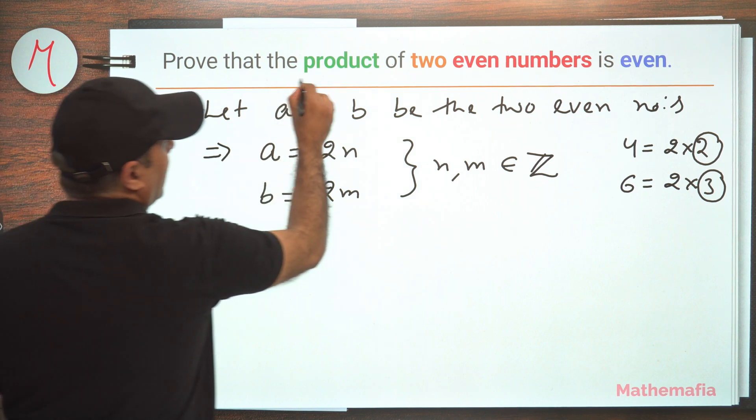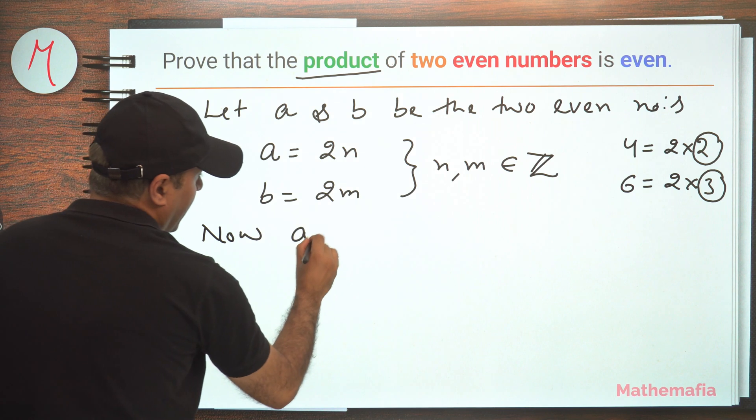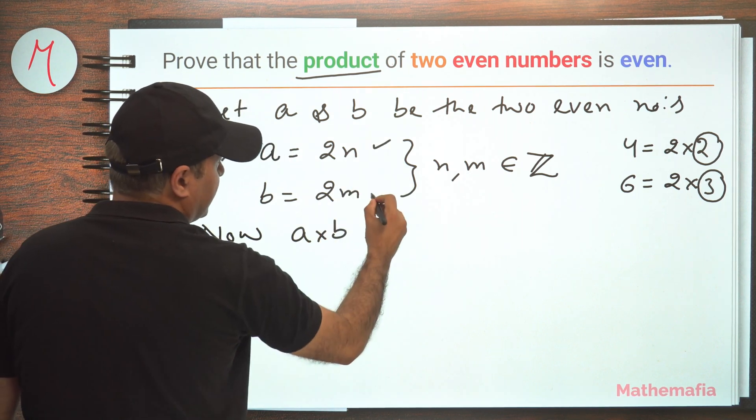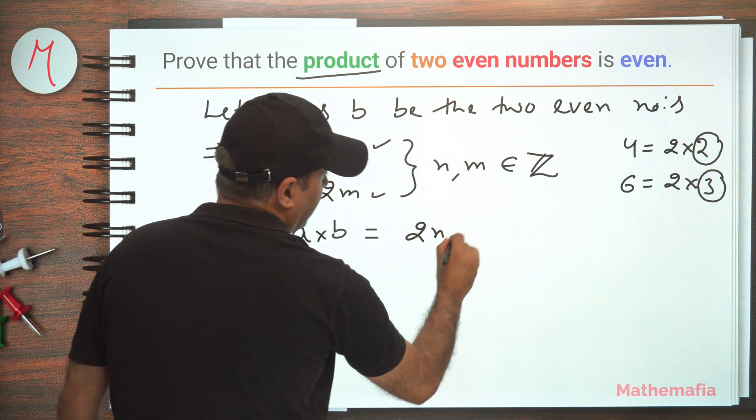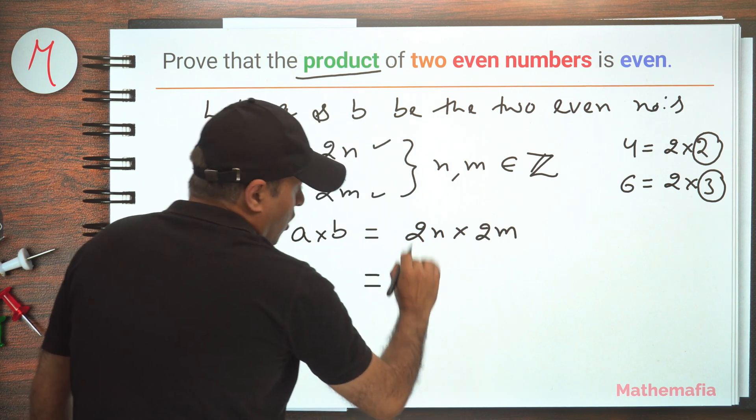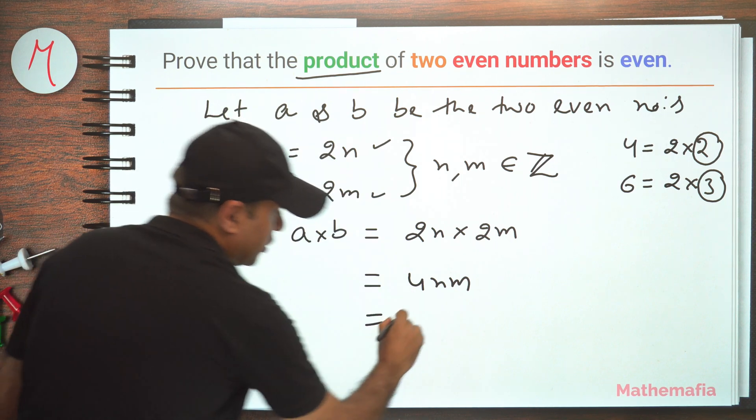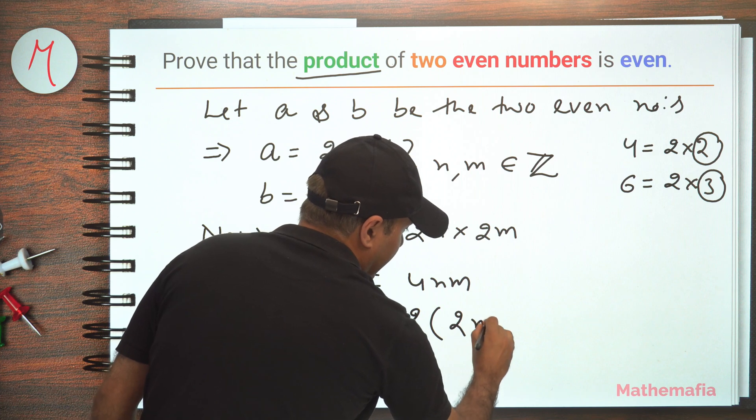Now we have to take the product of these two numbers. So let's multiply them. a times b equals 2n multiplied by 2m, which equals 4nm, but we can write it as 2 times 2nm.